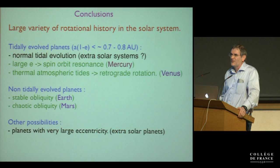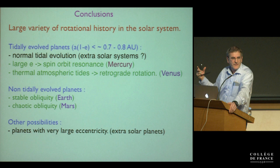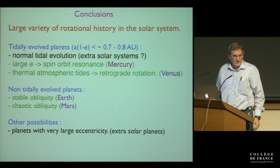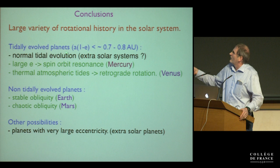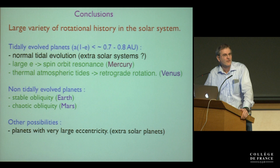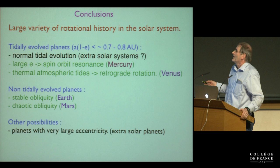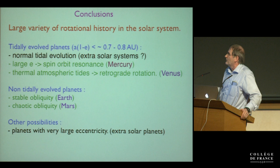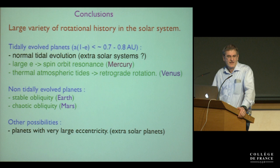In conclusion, there is a very large variety of rotational evolution in the solar system. Quite surprisingly, we don't have any planet in the simple one-to-one spin-orbit resonance that Chiaparelli would have expected. We expect many such planets in extrasolar systems, but we still cannot observe their rotation in a very obvious manner. Non-tidally evolved planets like Mars have chaotic obliquity, and planets with very large eccentricity — which we expect to find in extrasolar systems — add another regime of behavior.